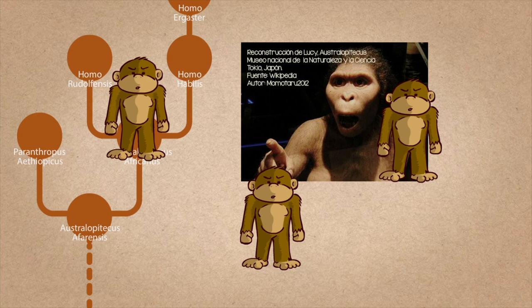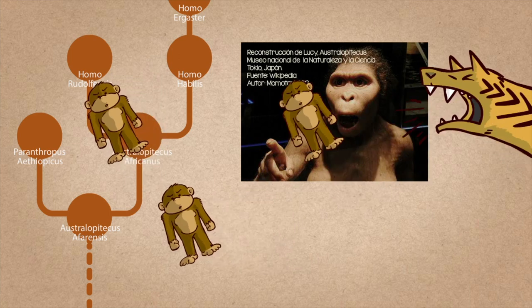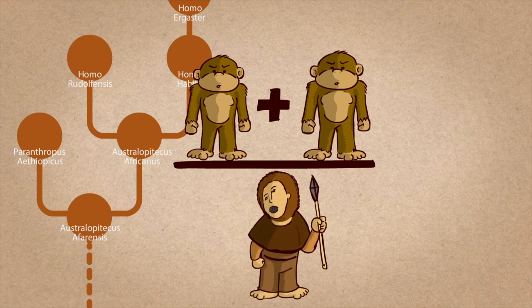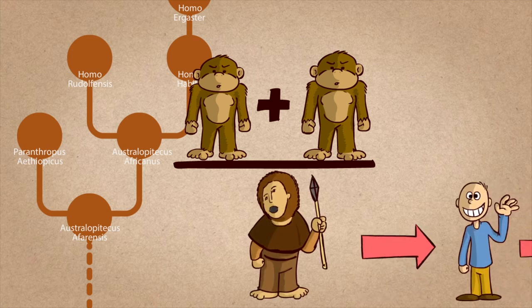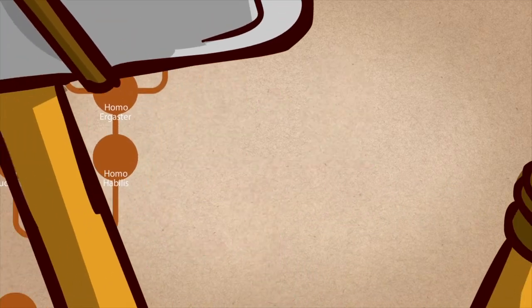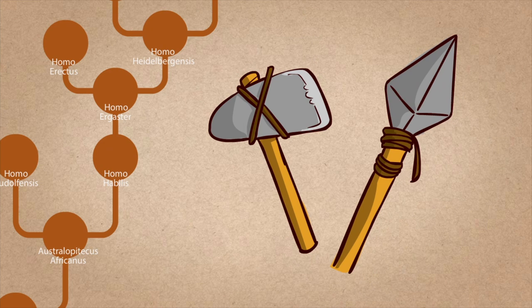The first Homo, direct relatives of humans—Homo habilis and Homo erectus—were descended from Australopithecus. At this time, approximately two and a half million years ago, our ancestors started using the first tools.